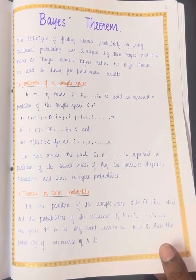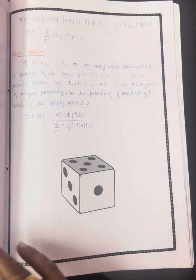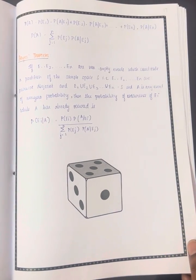The concept of total probability is explained, including the theorem of total probability and the statement of Bayes theorem.